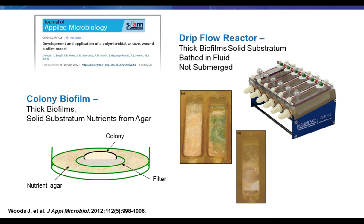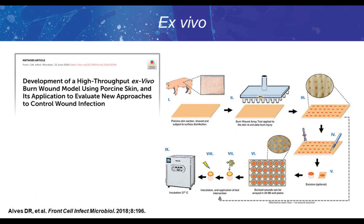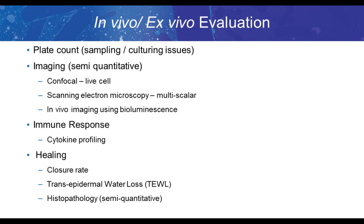Drip flow reactors and colony biofilms may resemble more of a biofilm with an air-liquid interface. The biofilms are bathed in a layer of liquid more like they might be in a wound environment, and we can quite easily imagine growing the biofilms in these systems and then applying a topical agent or dressing. Moving from glass or hard substrates, there's also a model developed by Wolcott et al. using porcine skin punched into coupons to grow biofilms, so the substratum looks more like an animal model — soft and actual skin — though without the immune response of an animal.